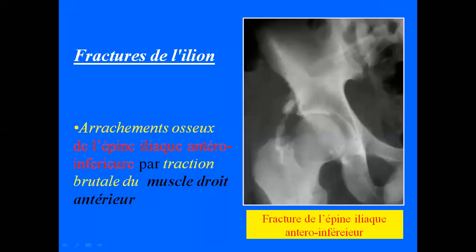Sur cette planche, on voit une fracture de l'ilion : un arrachement osseux de l'épine iliaque antéro-inférieure, au-dessus de la tête fémorale. C'est le muscle droit antérieur, faisceau du quadriceps, qui s'insère à ce niveau. Quand il se contracte brutalement chez un sportif, il arrache son insertion et on obtient une fracture de l'épine iliaque antéro-inférieure.